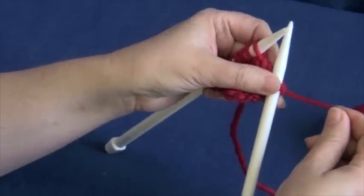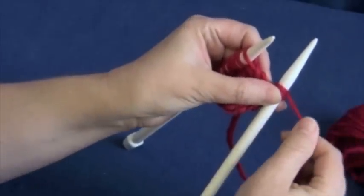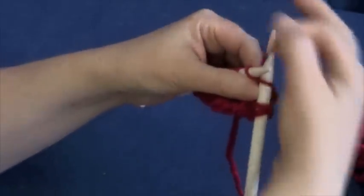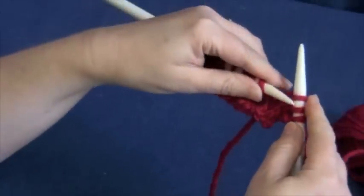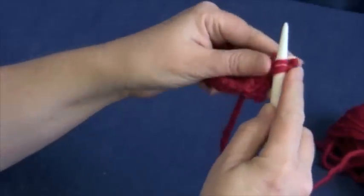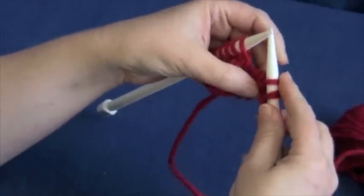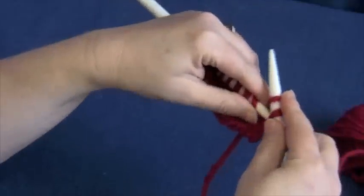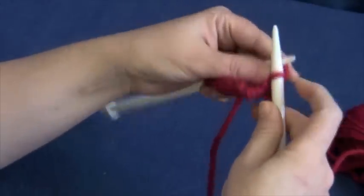This is where things change. We're going to do a yarn over purlwise, which means it goes from the back to the front over the top. Then we're going to knit, drop the bind off off the needle, and then drop the original stitch off the needle.